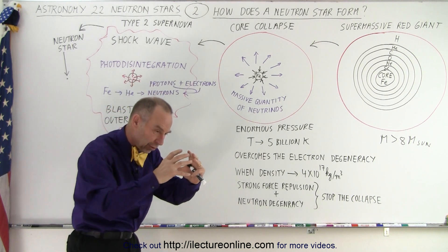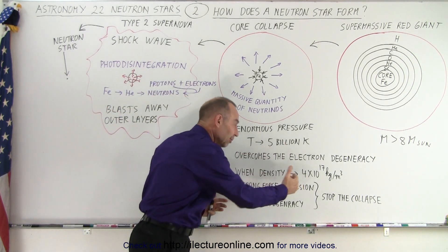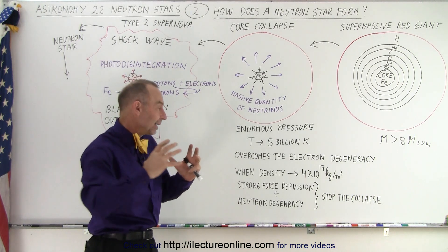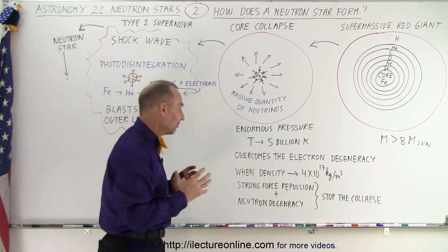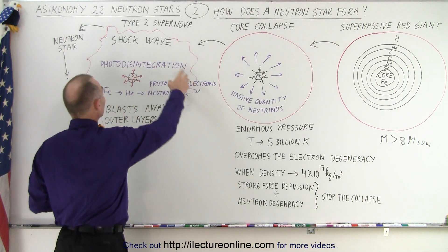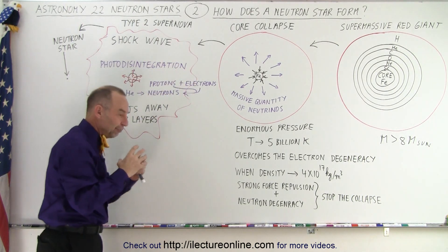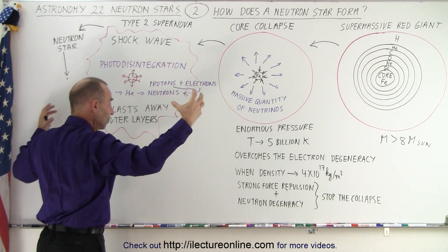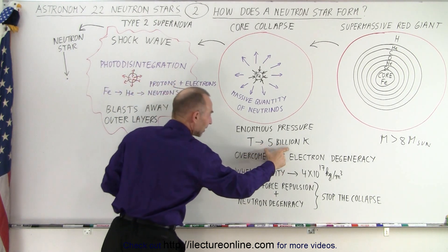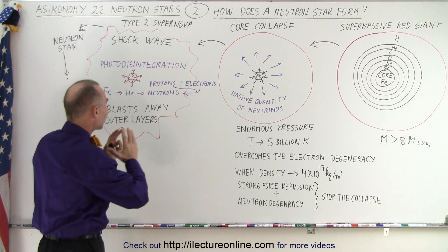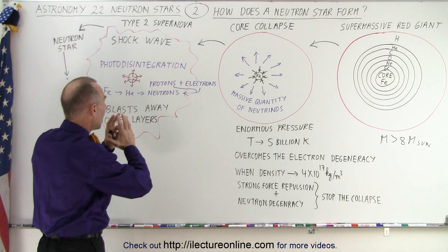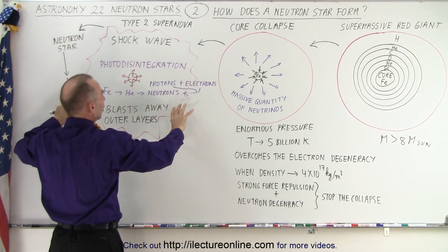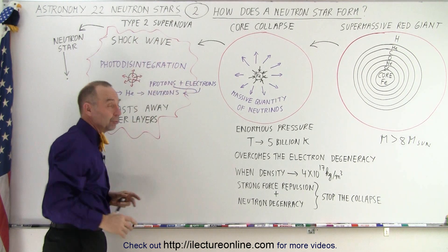The collapse compresses the core beyond the limits of normal density of nuclear material, and then it bounces back. The enormous amount of gamma ray photons created inside the core from this enormous collapse and extreme high temperatures then blasts through the core outward, blasting away the outer layers of the star — so that becomes a type 2 supernova.